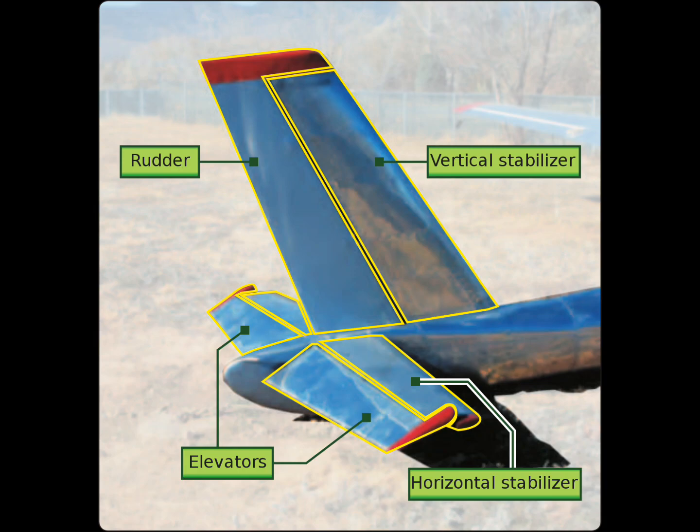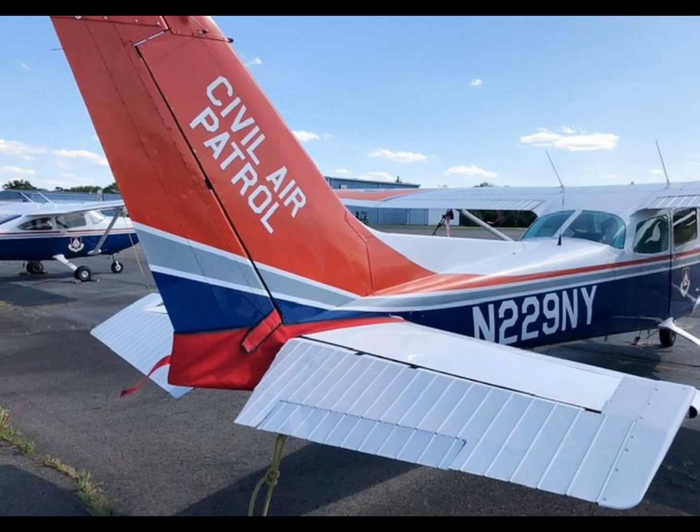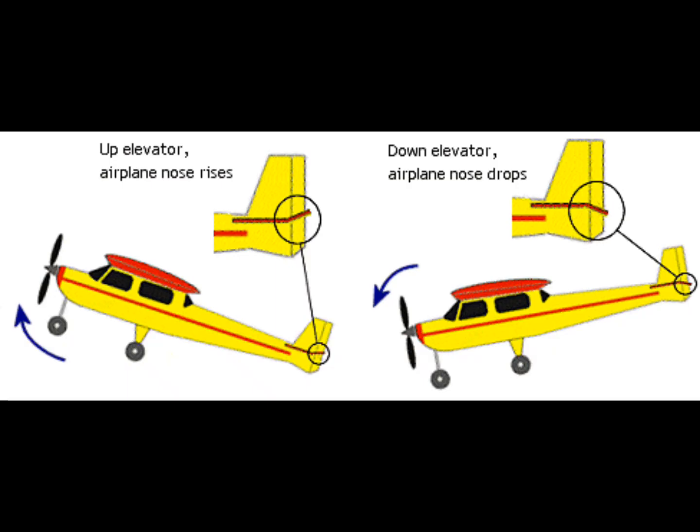An elevator is a primary flight control surface that controls movement about the lateral axis of an aircraft. It means an elevator is a flight control surface which controls the aircraft's pitch and therefore the angle of attack and the lift of the wing, which helps you climb and descend.